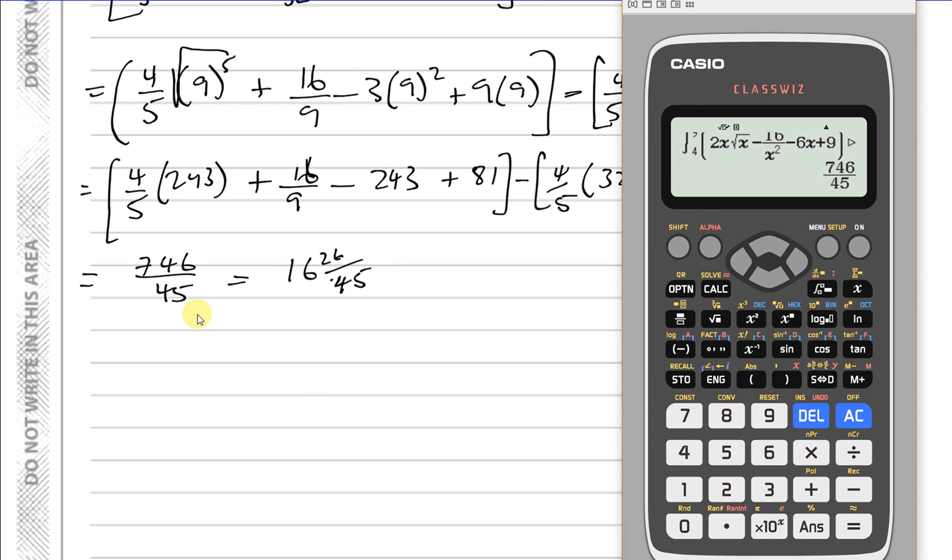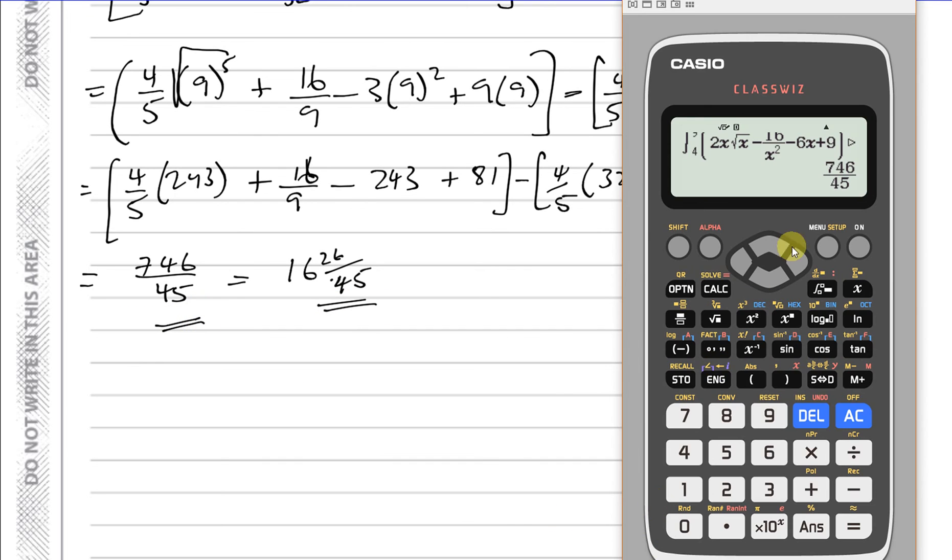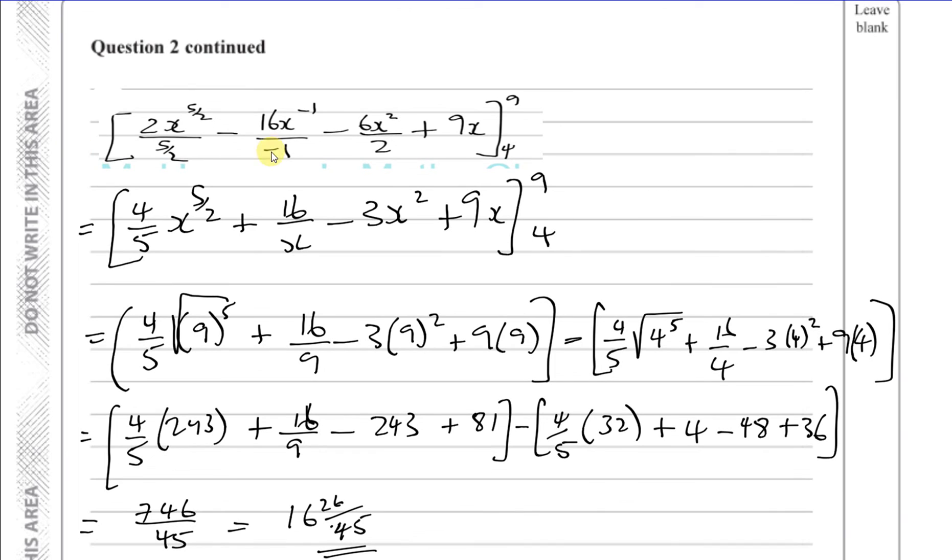Which is exactly what we got here, 746 over 45. So that's used as a way for you to check that you've got the right answer. If you made a mistake you'll be able to, it will show up. So it's very important that you don't just use this calculator to get the answer and write it down. You won't get any marks. This is just purely a way for us to be able to check that we've done the right thing. You haven't made a silly mistake somewhere.